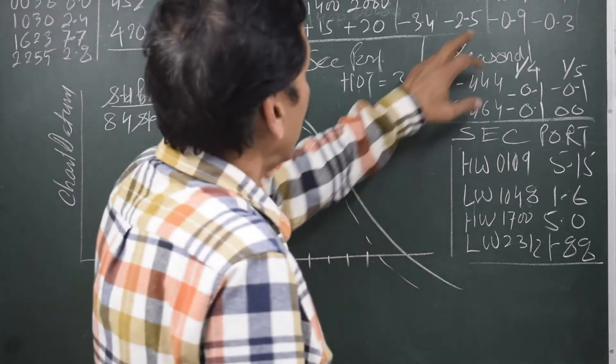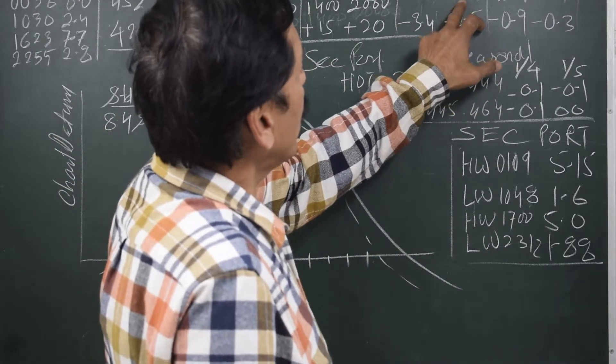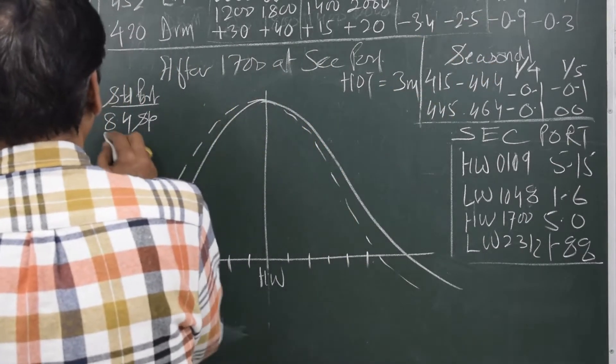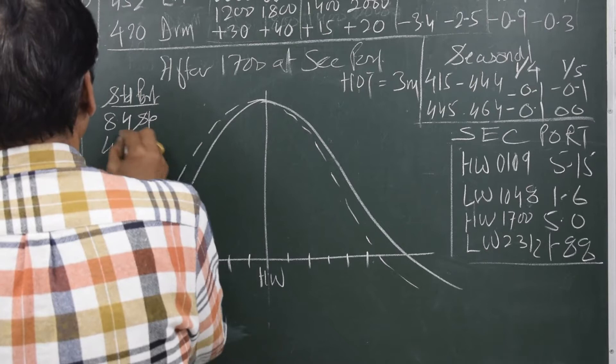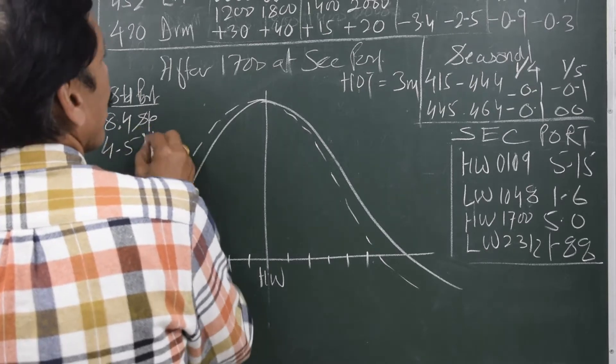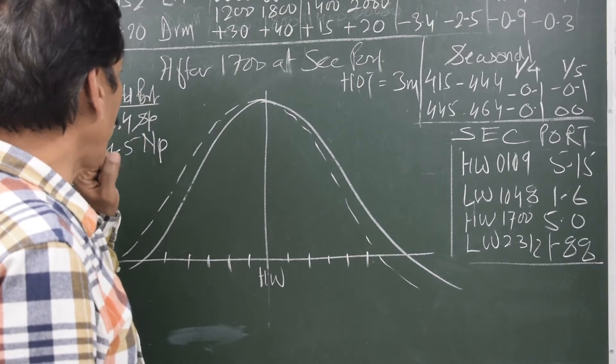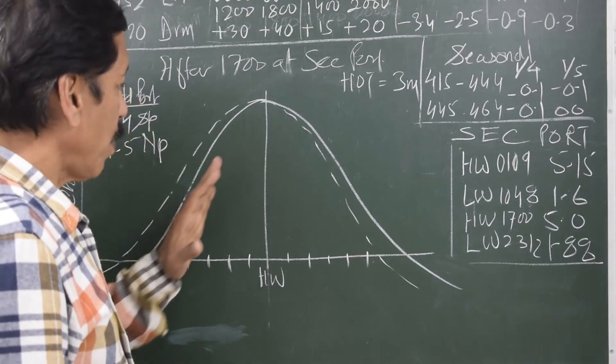And let us see what is the difference for the neep. Neep, it is 4.5 I suppose. So 4.5 is the neep range and 8.4 is the spring range for the standard port.